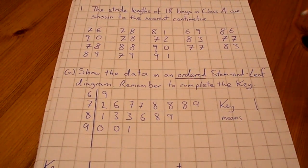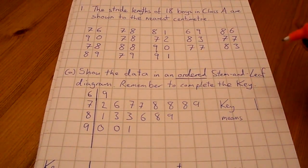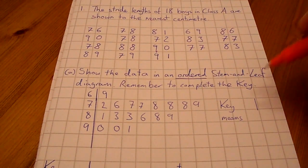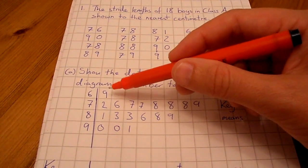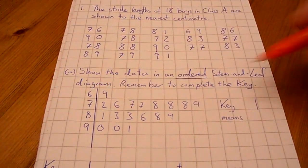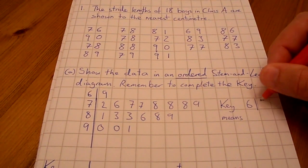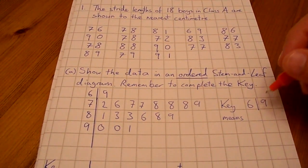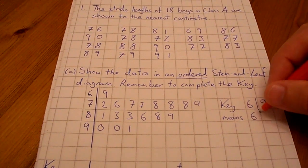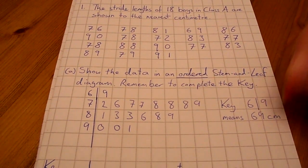Don't forget the key. You must have the key. A good tip is to use just the first number, so you can use this number here. The key will be one number from your list describing what it means, and don't forget your units.